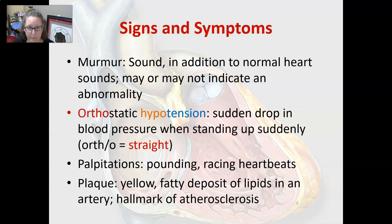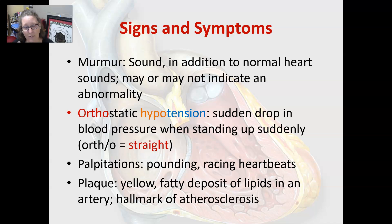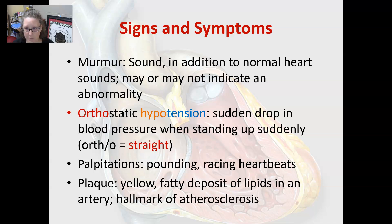A murmur is a sound in addition to the normal heart sounds. It may or may not indicate an abnormality — often it might be a valve abnormality. It's just a way to note that there's an extra sound that we might need to investigate. Orthostatic hypotension is a sudden drop in blood pressure when standing up suddenly. 'Ortho' means straight, which is why it's called orthostatic.